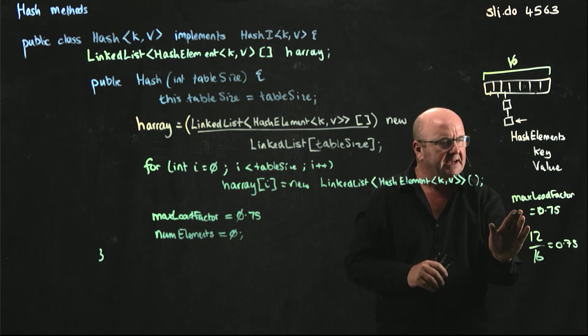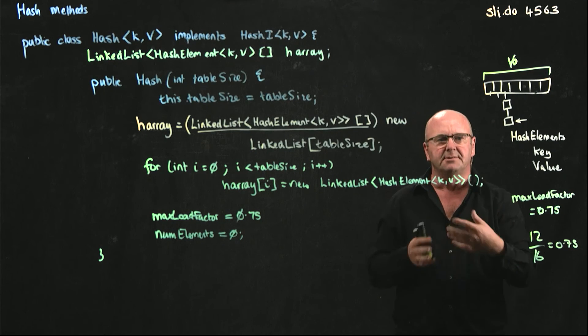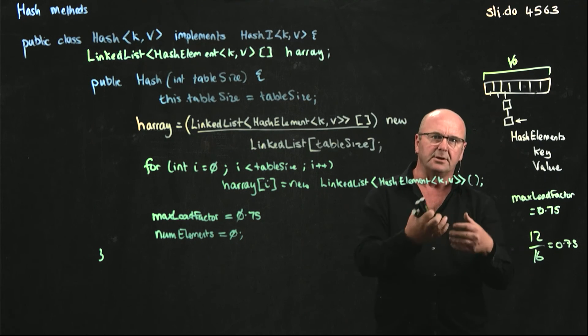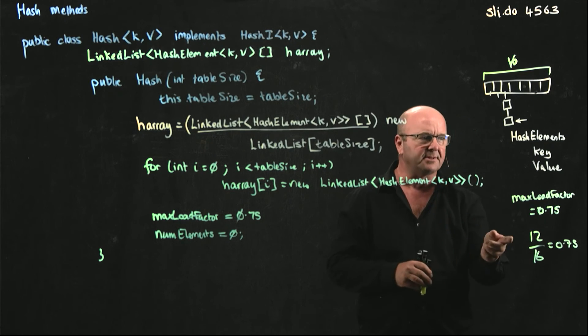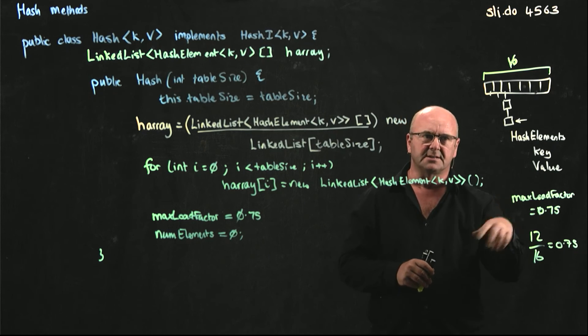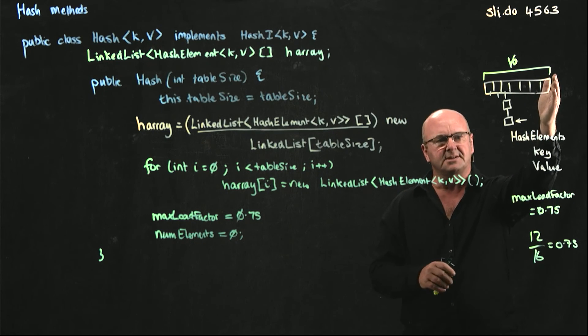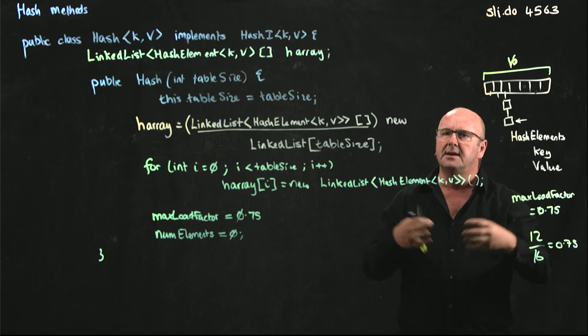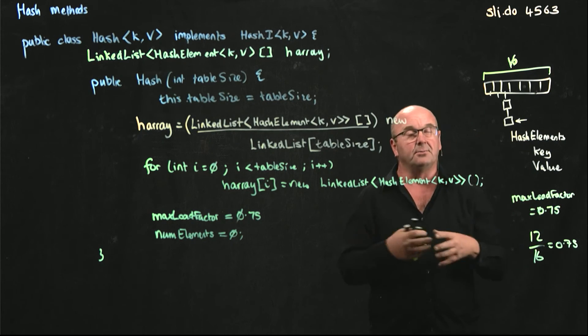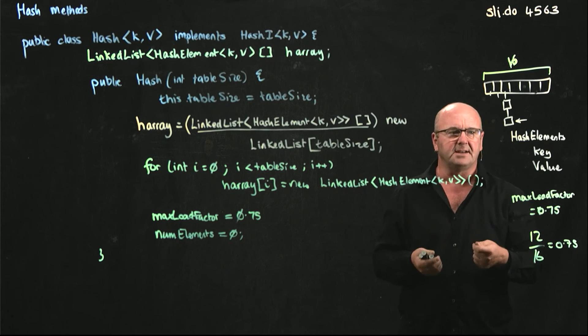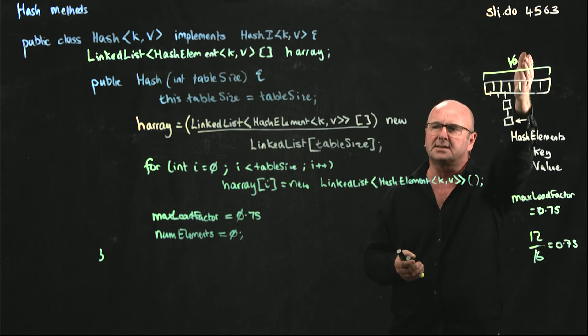The choice of max load factor is really up to you as the designer or you as the user of the hash. And in the Java API, you can set what the max load factor is so that at what point it resizes. You can also set the initial table size. So if you're making a data structure and you're going to add a lot of data to it, you might want to initialize it to have a large table.